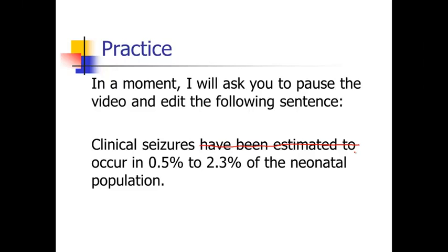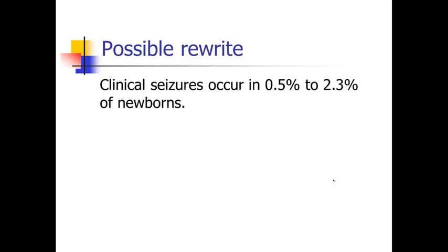Then we get to 0.5% to 2.3% of the neonatal population. You might think 'neonatal population' sounds really important and leave it untouched — in fact, the first time I edited this sentence I missed this. But what is a neonatal population? 'Neo' means new, 'nate' means born — so this is just a fancy way of saying newborns. See how much more direct and easy that is to read: clinical seizures occur in 0.5% to 2.3% of newborns. And of course we'd want references at the end.